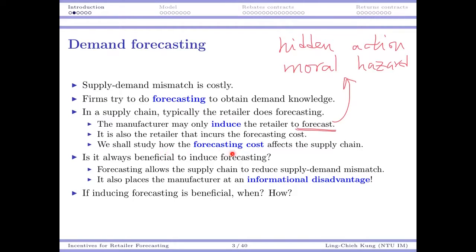We will study how the forecasting cost affects the supply chain. Obviously, if the cost is small, it's easier for the manufacturer to induce the retailer to do forecasting; otherwise it may be hard. We also want to study whether it is always beneficial to induce forecasting — this question may be answered from the system's perspective, the retailer's side, or the manufacturer's side. Whether there is a forecasting action affects the system in many different perspectives.